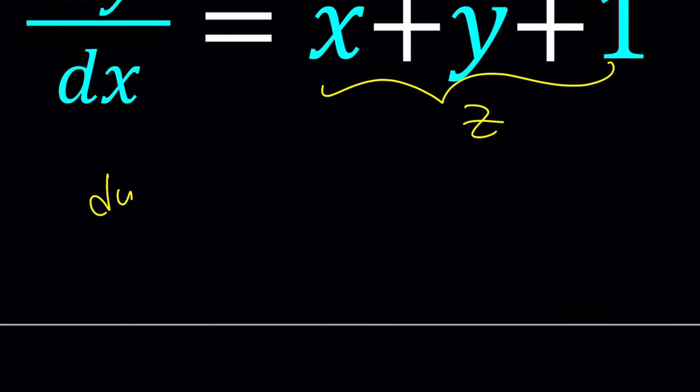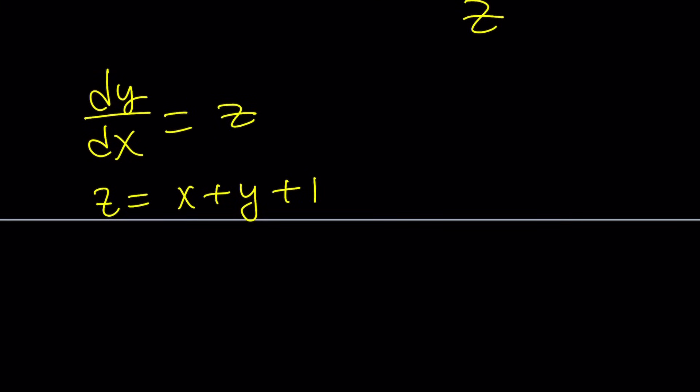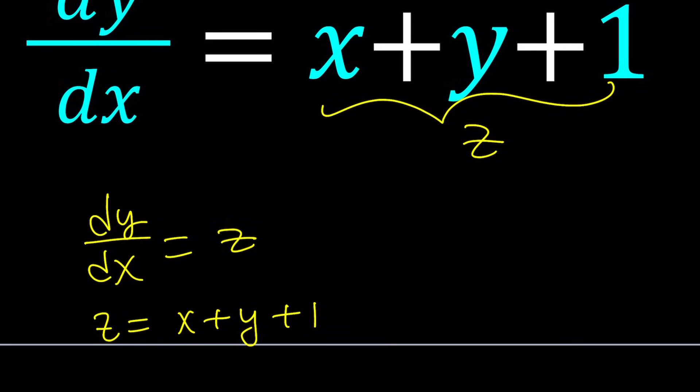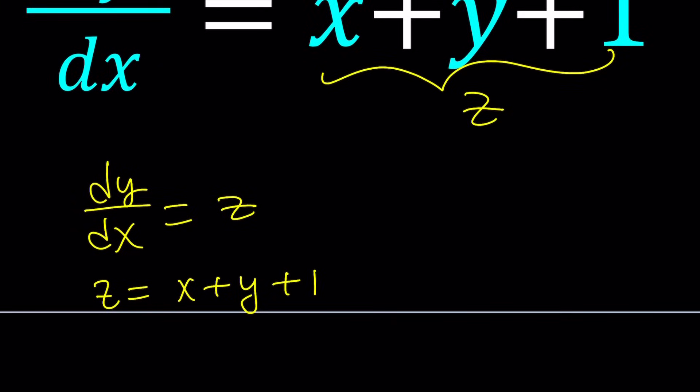That gives us dy/dx equals z. So what is so good about this? This doesn't look very helpful. But here's the thing, if you know that z is equal to that, obviously you can differentiate both sides. So from here, you're going to be able to find the derivative of z with respect to x, as well as the derivative of y with respect to x. So first step was substitute z for the whole thing and write down what it means. And then we just wrote z equals x plus y plus 1 because that was our assumption.